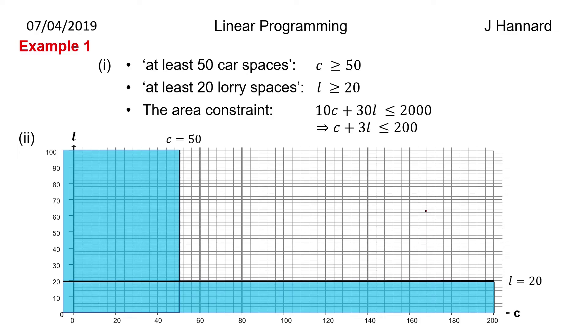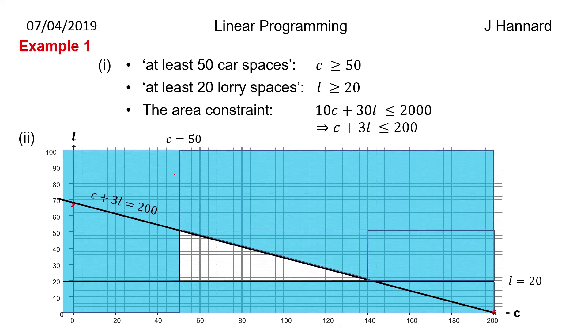And then the area constraint. So C plus 3L is less than or equal to 200. Again I would recommend the cover up method here. So if you cover up 3L you've got C equals 200. You draw across there. Like that. And then if you cover up C you've got 3L is 200. So L is about 67. Something like that. So it's around about up there. Then you draw your line in. And I tell you what I was pretty close to it wasn't I? But there you go. And then you ask yourself do you want to be above or below the line. We want to be below it. So we shade above it like that.